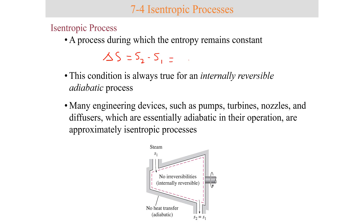Now, if I want to write down the second law for a closed system, I would get that entropy transferred by heat plus entropy generated equals the change in entropy of the system.